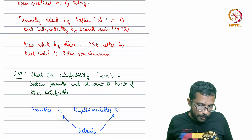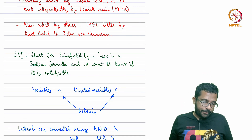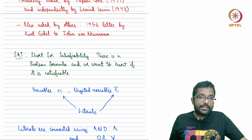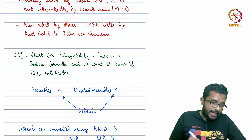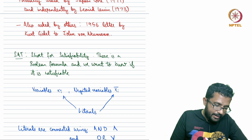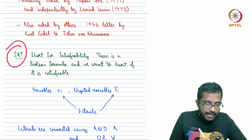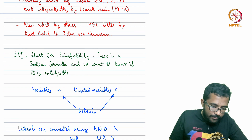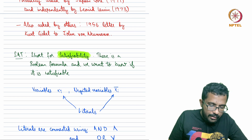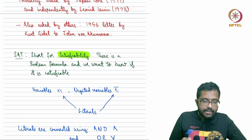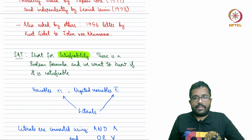Now we come to another problem in NP called SAT. SAT is short for satisfiability. It is a Boolean formula and we are asking whether it is satisfiable.